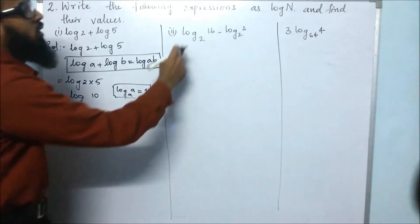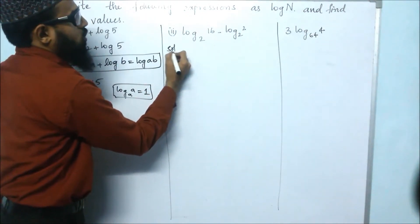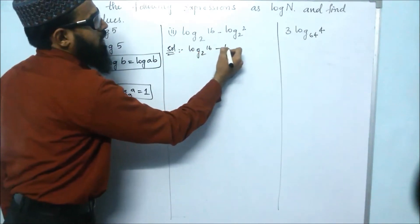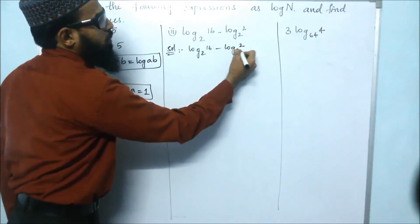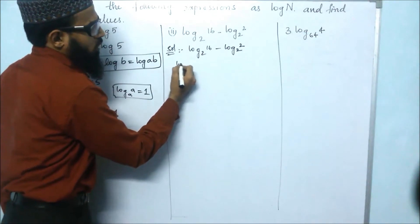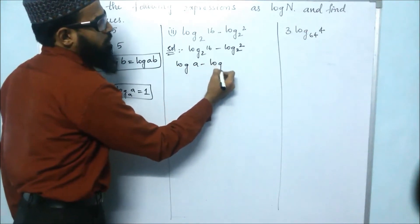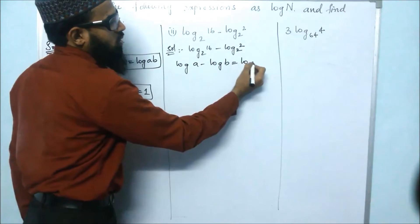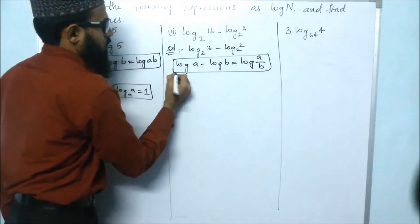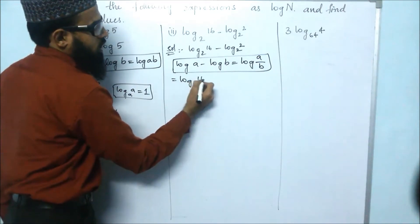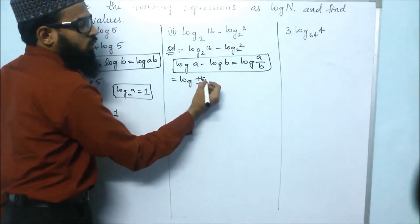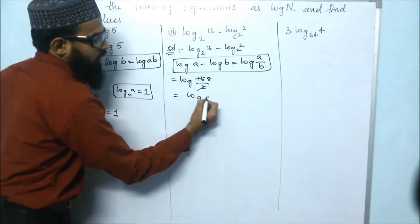The next bit is log 16 base 2 minus log 2 base 2. Using the formula log a minus log b equals log a/b, we get log 16/2 base 2. Since 2 into 8 is 16, that gives us log 8 base 2.